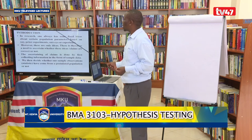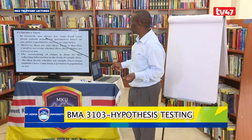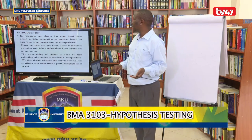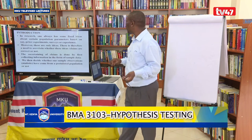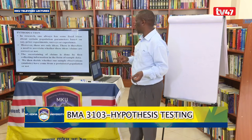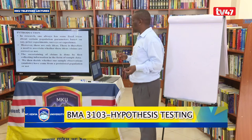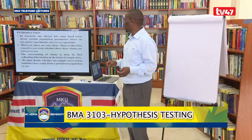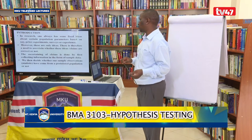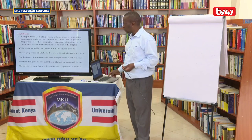In research, we always have some fixed ideas about certain population parameters based on experiments, surveys, or experience. These are only ideas, and there is therefore a need to ascertain whether these ideas are correct or not. The ascertaining is done by collecting sample information from the population, and then we decide whether our sample observations or statistics have come from the population that was actually hypothesized.